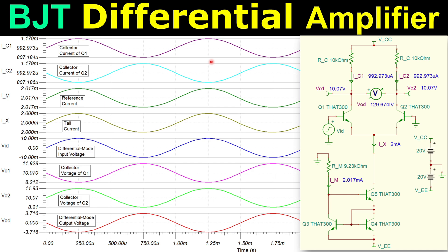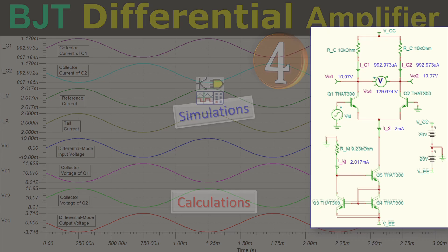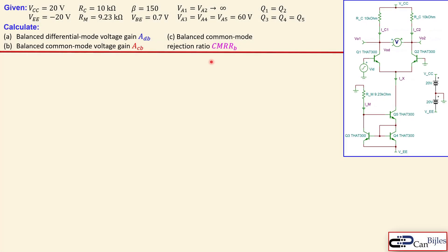Welcome to a new video about BGT differential amplifiers. This is example number four, where we use the BGTs again in differential pair format, but we will use the Wilson current source for our current source realization. We will work out everything in calculations step by step and also verify these in SPICE simulations.